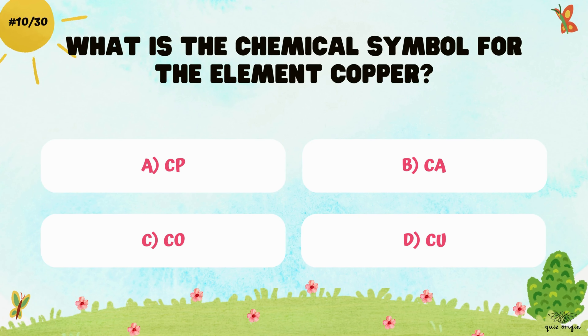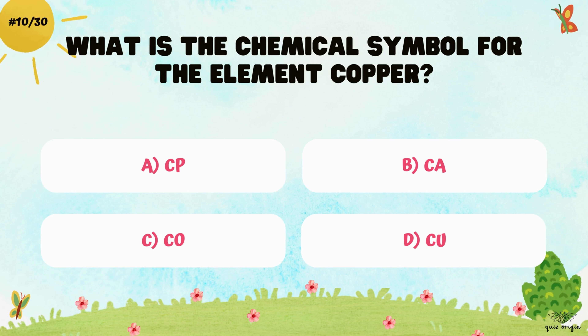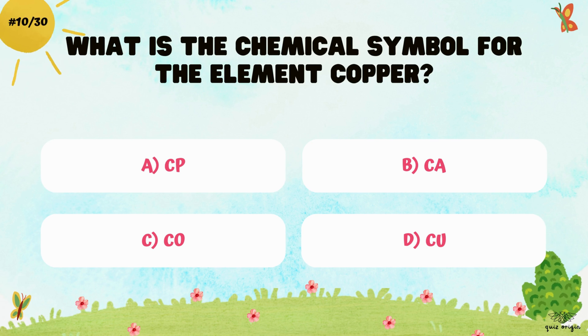What is the chemical symbol for the element Copper? A. Cp, B. Ca, C. Co, and D. Cu.